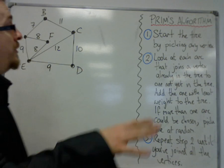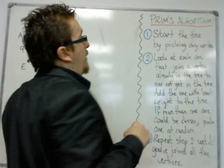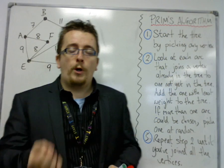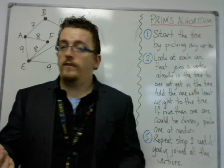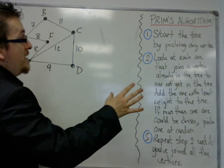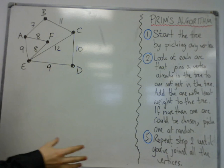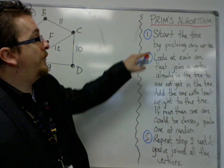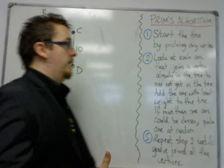Prim's algorithm starts by saying start the tree by picking any vertex. Usually in the exam, you'll be told which vertex to start with. That is just to make the examiner's life a lot easier, but in reality, you could start with any vertex you like.